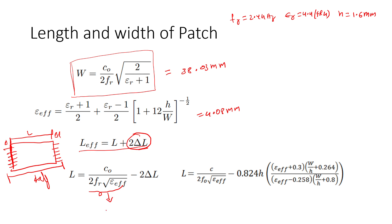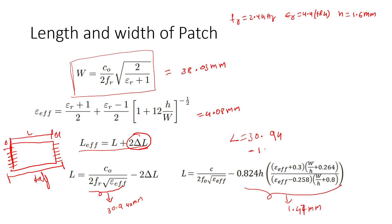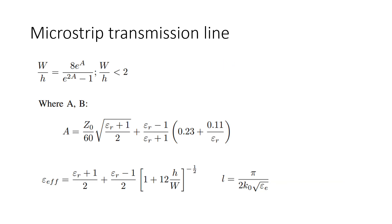The effective length comes out to be 30.944 mm. The 2ΔL part is 1.47 mm. So the actual length will be 30.94 minus 1.47, which is approximately 29.5 mm. So length is 29.5 mm and width is 38.03 mm.